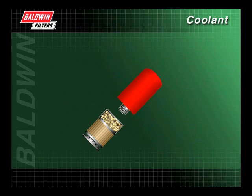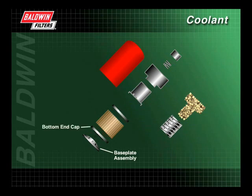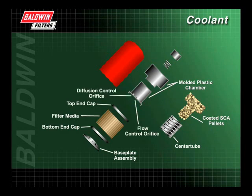The primary components of a controlled release spin-on coolant filter are a base plate assembly, a bottom end cap, the filter media, a top end cap, a center tube, a molded plastic chamber, coated SCA pellets, a diffusion control orifice, a flow control orifice, a compression spring, a spring protector, and the canister.